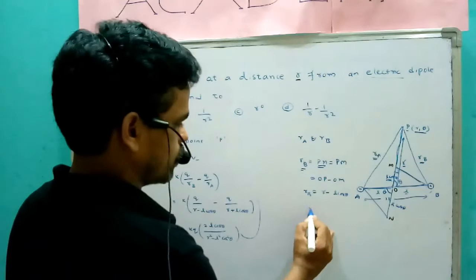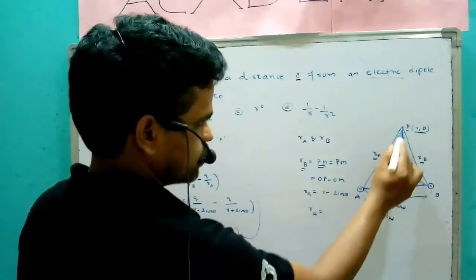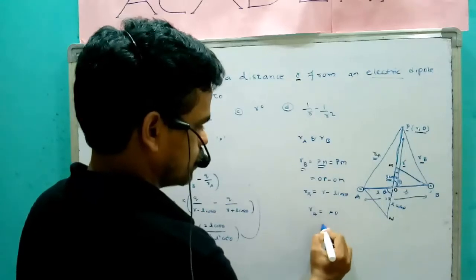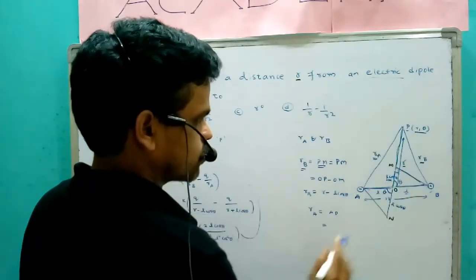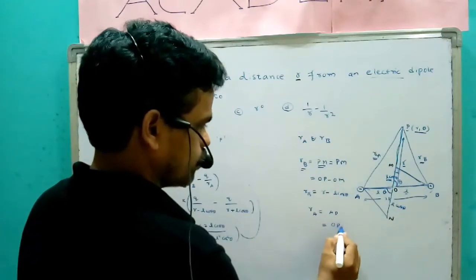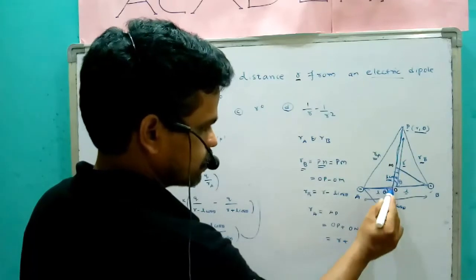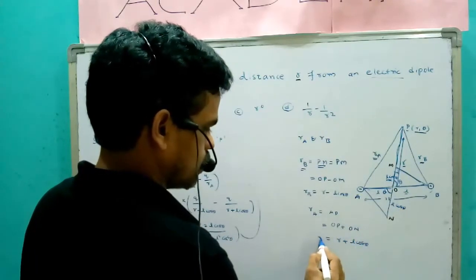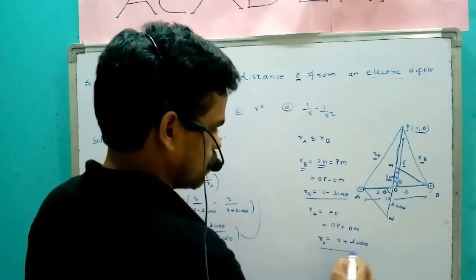Now I want to calculate R_A. Here R_A is the distance AP. That distance is OP plus OM, which is R plus L cos theta. So now I have got two distances: R_B = R − L cos θ and R_A = R + L cos θ.